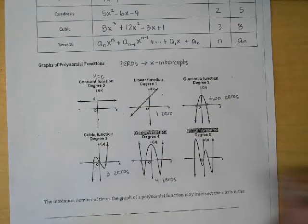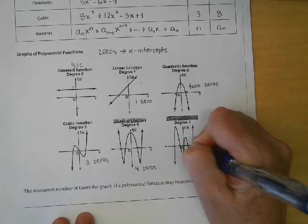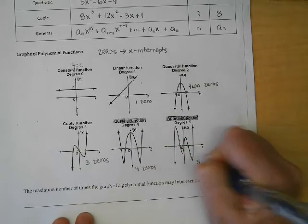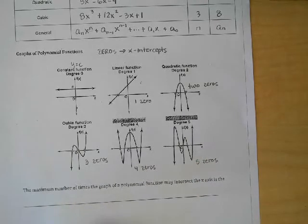Remember we don't count the y-axis. This has four zeros, one, two, three, four, five. Every time that we deal with a quadratic it doesn't always have two zeros, but it can have at most two zeros.